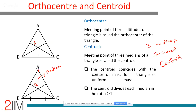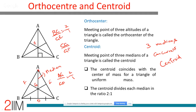An important property: the centroid divides each median in the ratio 2:1. So if AD, BE, CF are medians meeting at G: AG/GD = BG/GE = CG/GF = 2/1. Altitudes meet at the orthocenter; medians meet at the centroid.